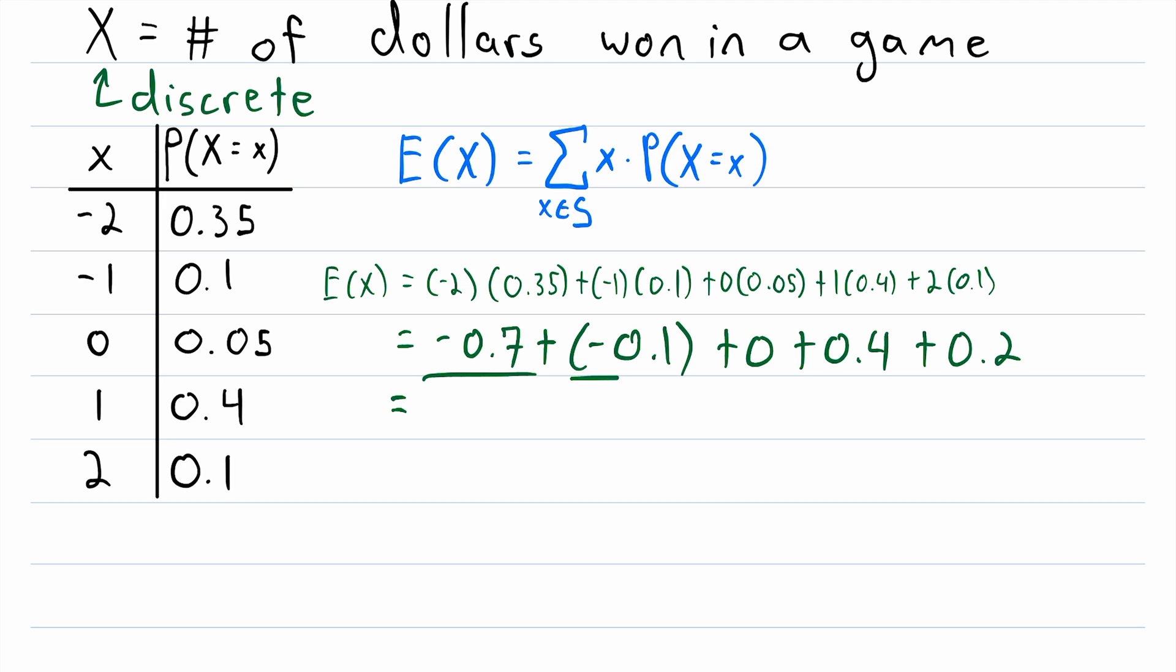We have negative 0.7 plus negative 0.1, that's negative 0.8. Plus 0, plus 0.4, that's negative 0.4. And then plus 0.2, that's negative 0.2.